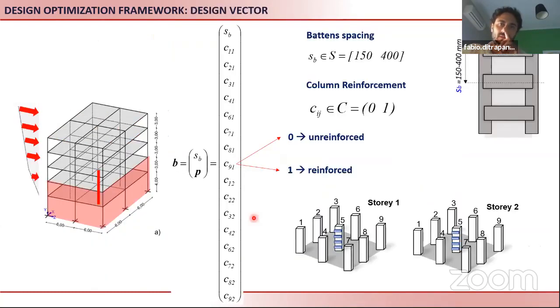Basically we define a design vector. In this design vector you have some binary variables. Zero means that the column is not reinforced, one means that the column is reinforced. These are boolean variables, while the first variable is the spacing of the steel.